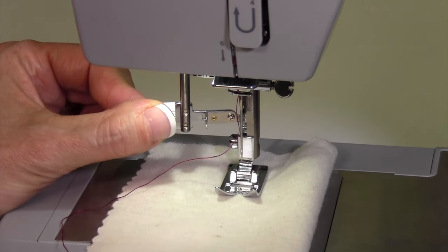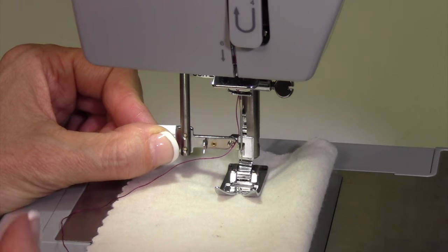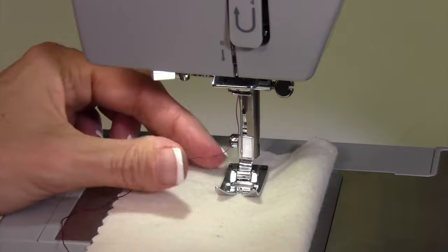Check your needle threader. If it looks like it's leaning a little off to the side and definitely not coming through the eye of the needle, you're going to need to adjust it or have one of your local sewing machine stores adjust it for you so it actually lines up with the needle.